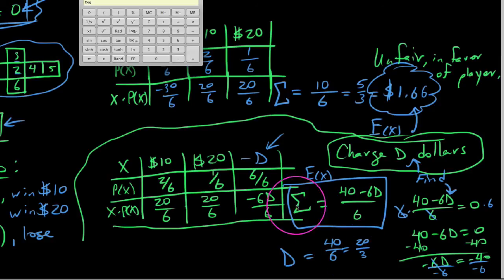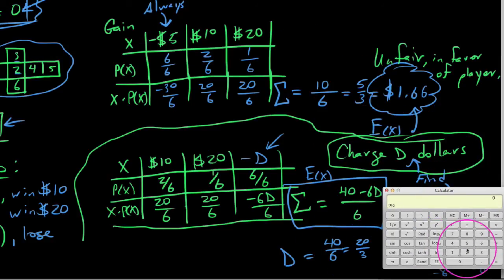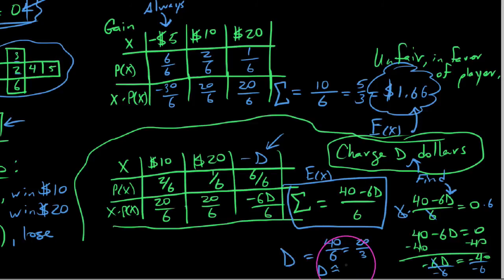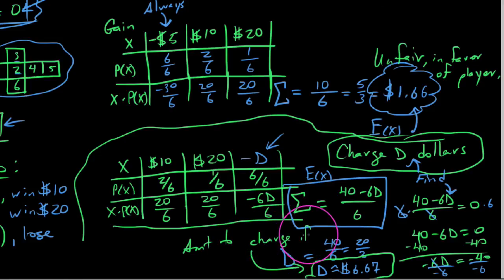And if I were to now open up a calculator and say what does this actually simplify down to? We say 20 divided by 3: $6.67. So we say D is approximately $6.67. Now I'm going to put a big box around here. But basically, this is what we determined would make the game fair if we were to charge this amount. So essentially, if I were running this game, this is the amount to charge if it's fair.